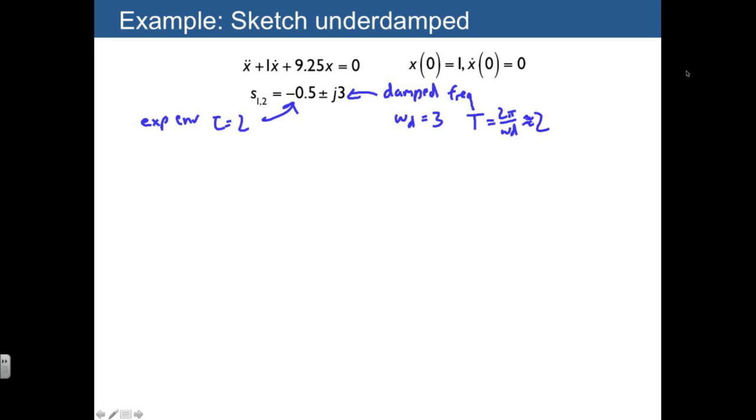So capital T is referring to the period of the sinusoid, and tau is referring to the time constant of the exponential.